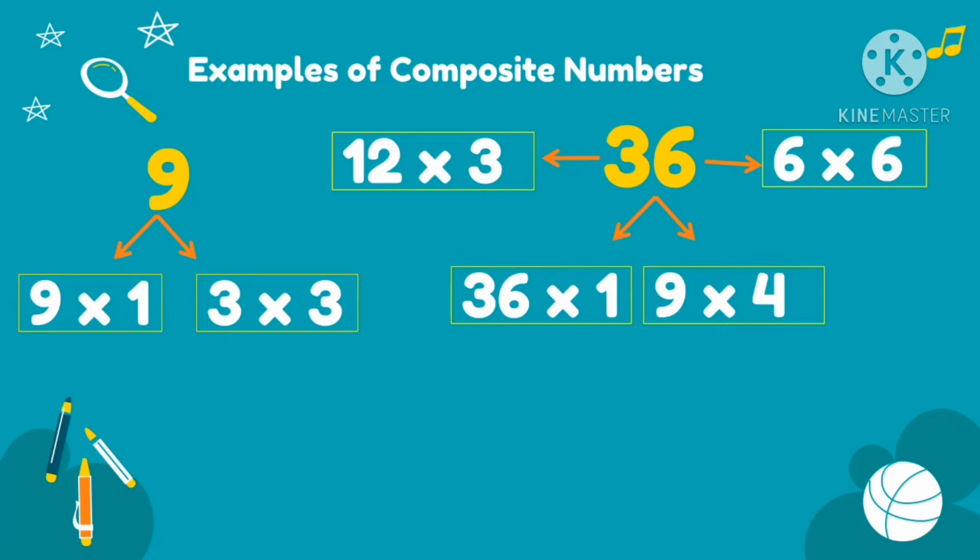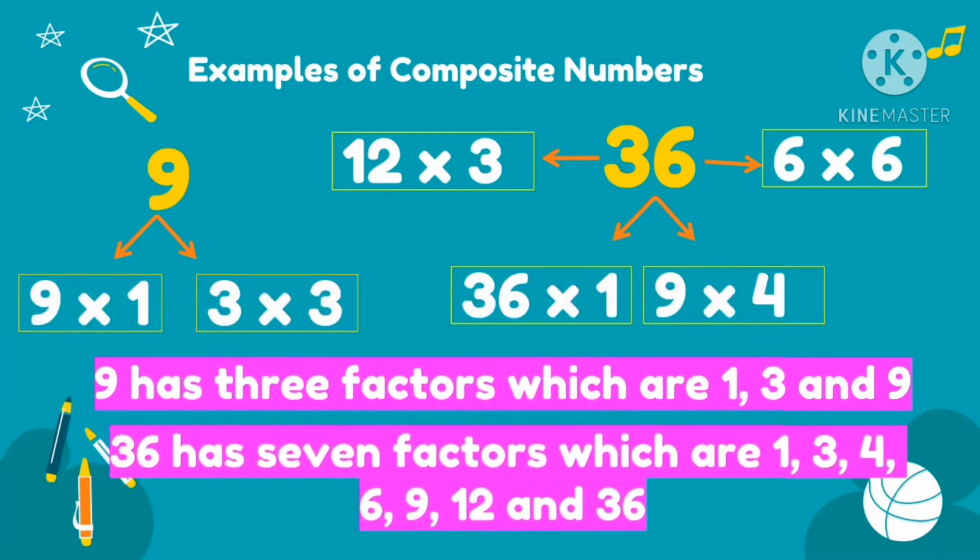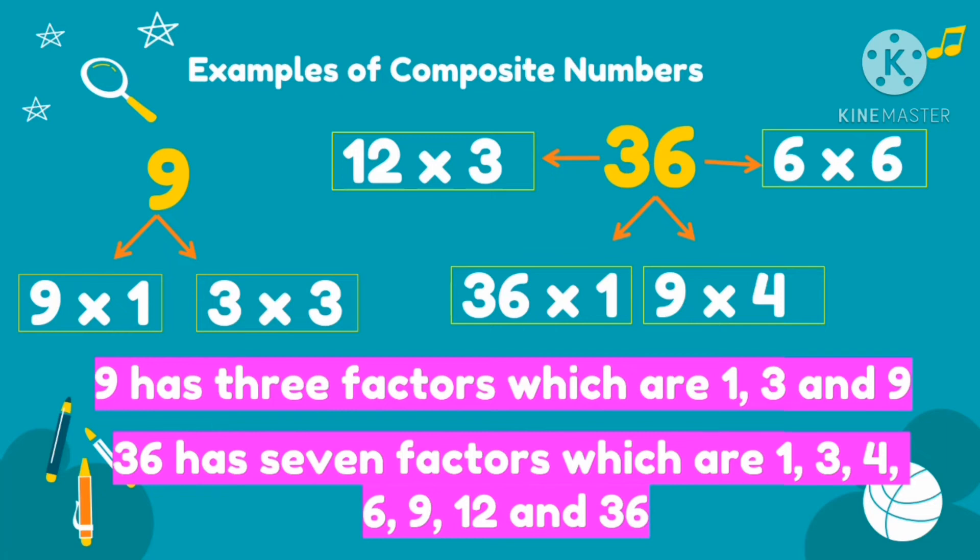So those are the factors of 9 and 36. So let us list them. The factors of 9. So 9 has 3 factors, which are 1, 3, and 9. We only count once because 3 is doubled. So it has 3 factors only. Then, 36 has 7 factors, which are 1, 3, 4, 6, 9, 12, and 36. So they have more than 2 factors, that's why they are composite numbers.